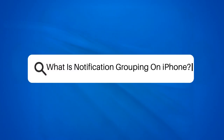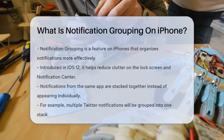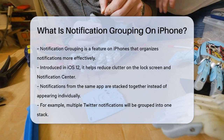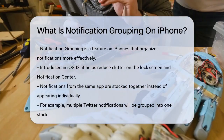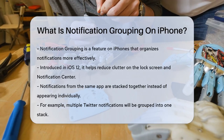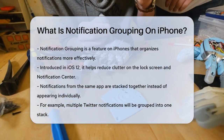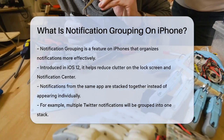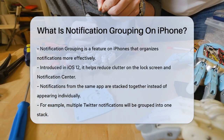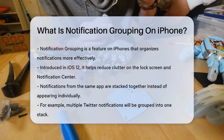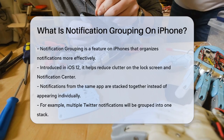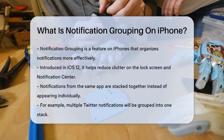What is notification grouping on iPhone? If you're wondering how to manage the constant stream of notifications on your iPhone, you're probably curious about a feature called notification grouping. Let's break it down to help you understand and use it effectively. Notification grouping is a feature introduced in iOS 12 that helps organize your notifications in a more manageable way. Instead of seeing each notification from an app separately, they are grouped together into bundles, making your lock screen and notification center less cluttered.